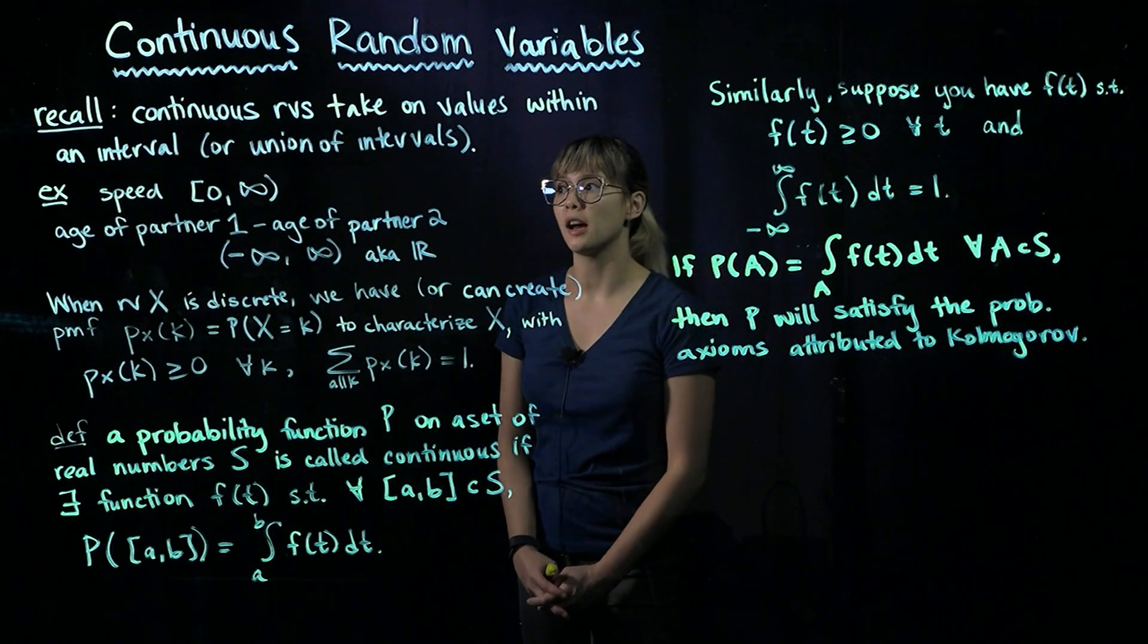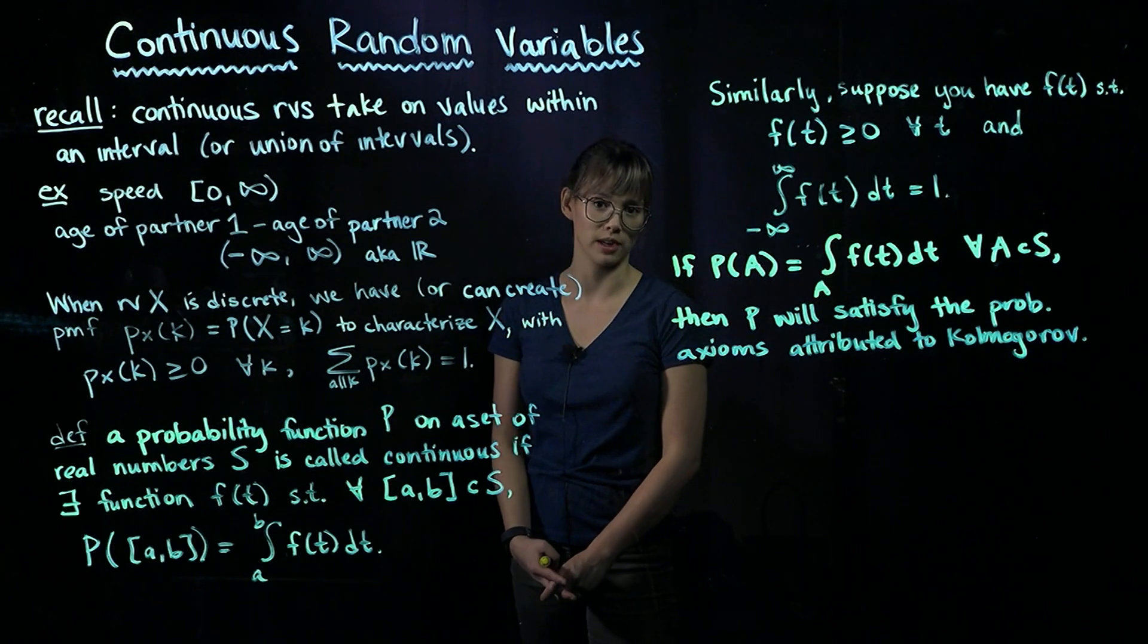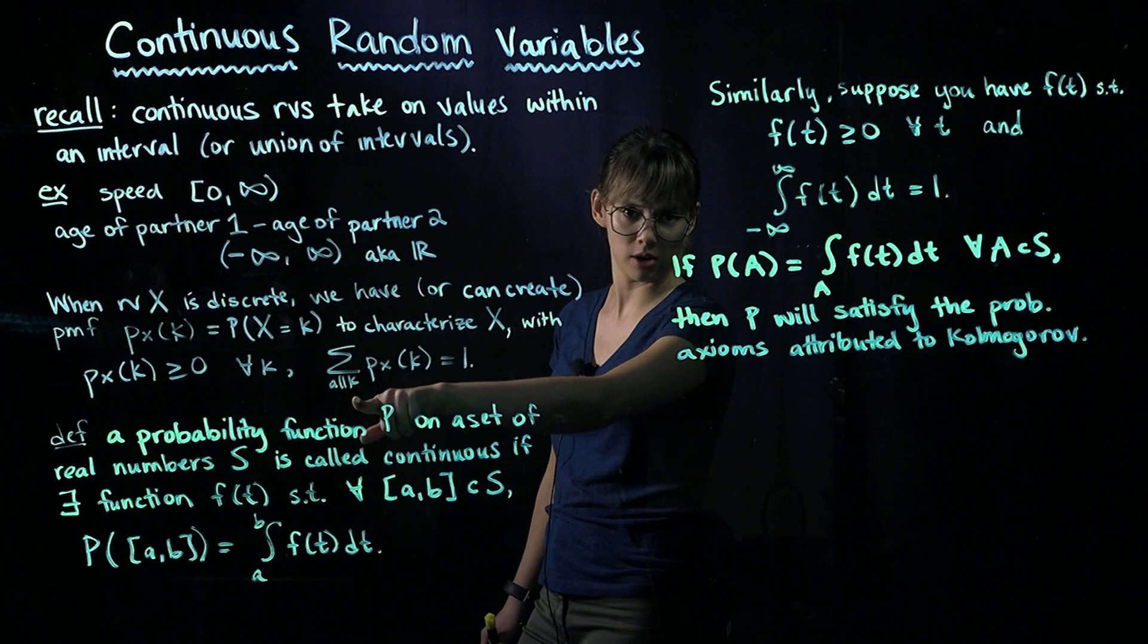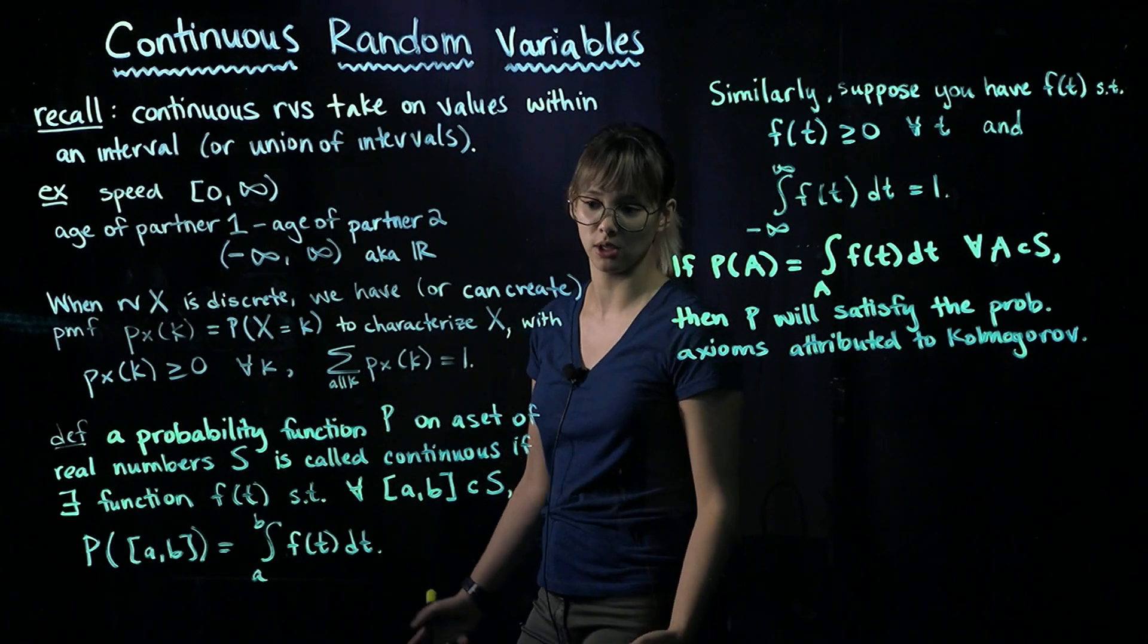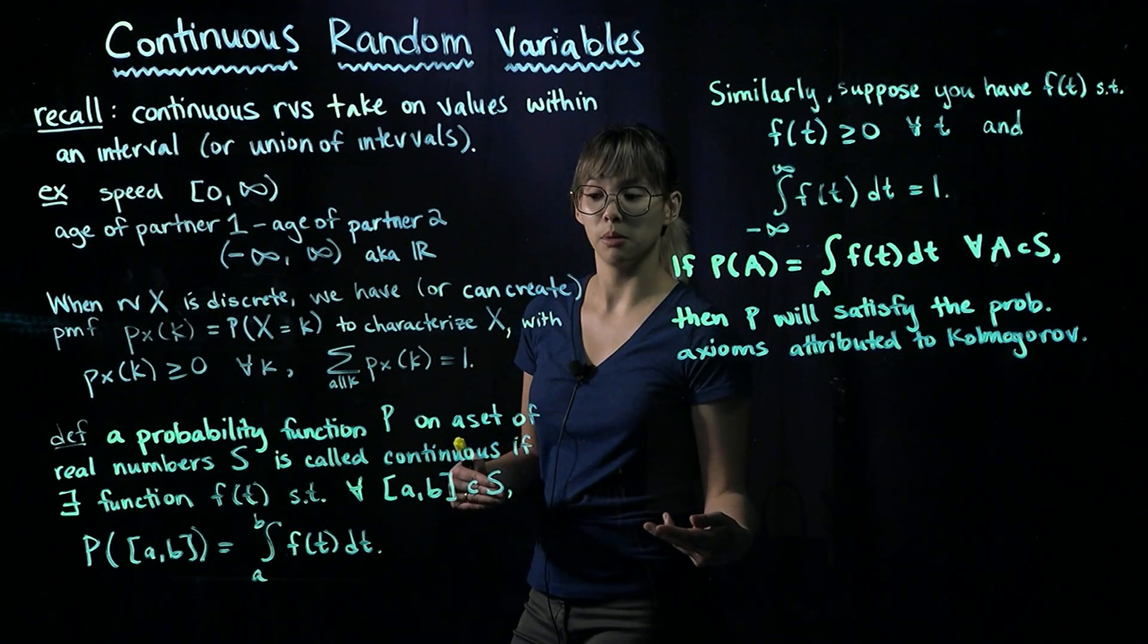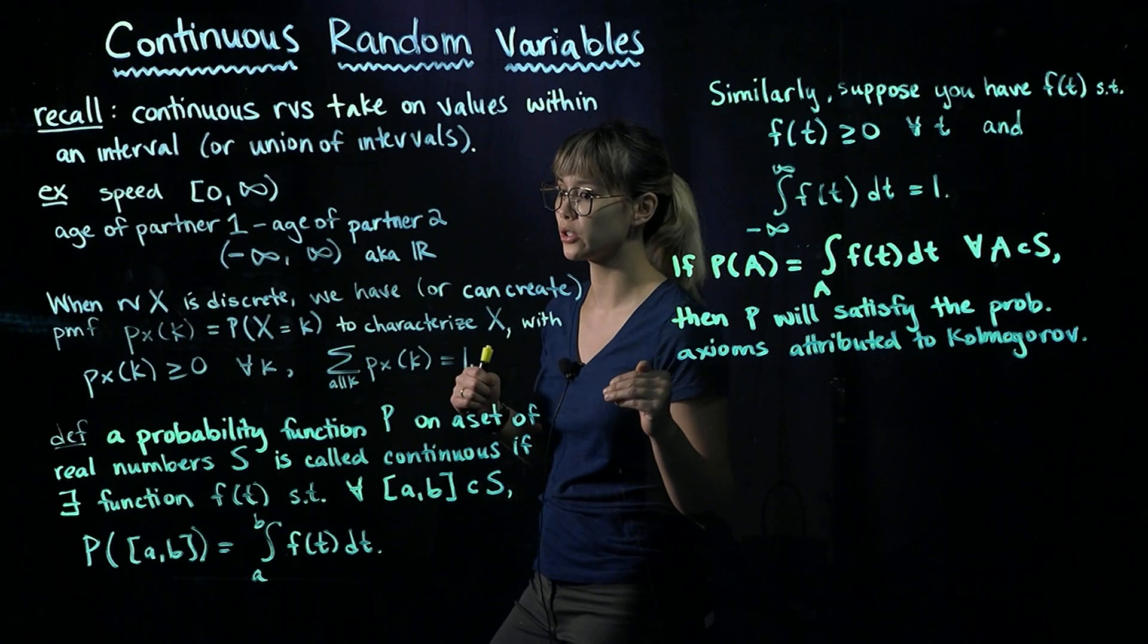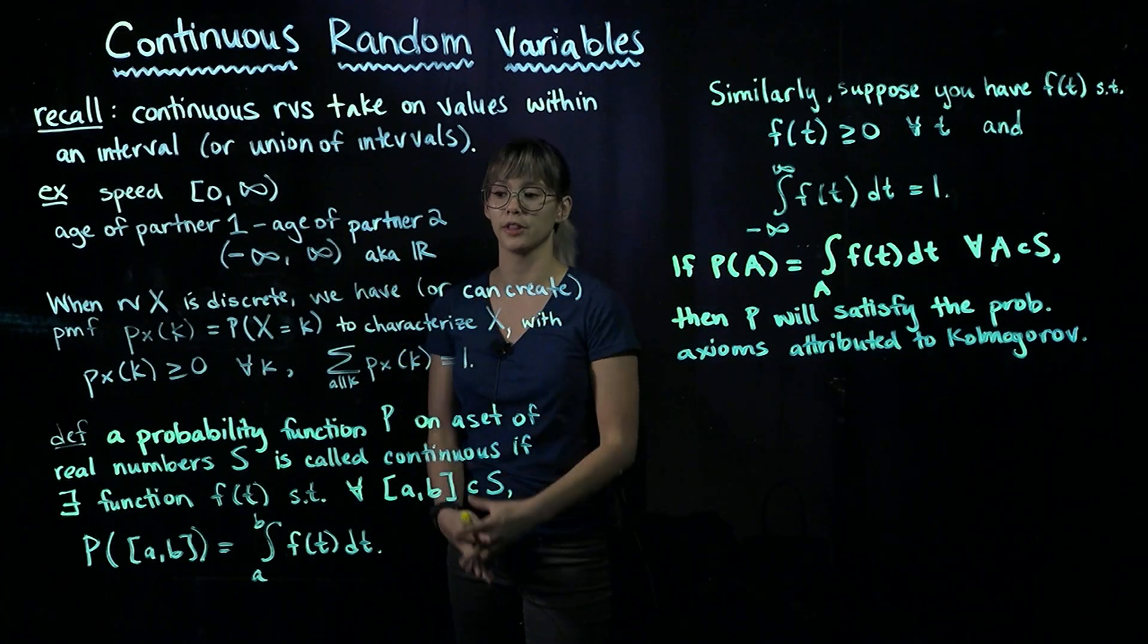Well, remember we said that we have uncountably many values that our continuous random variable could take on. So how are we supposed to sum over all of the values? There are uncountably many. So where would we start? And even if we did choose a place to start, say we just started at the value zero, what would be the next value that we would add up? There's no next value in the real numbers.